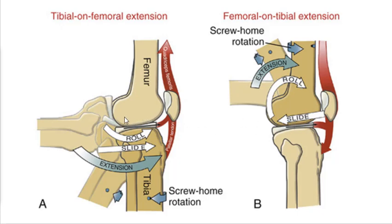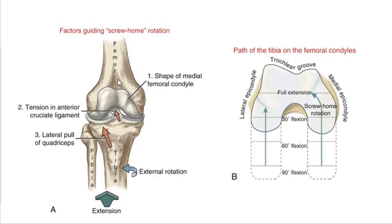Now, because the medial condyle is larger, there's a mechanism called the screw home rotation that brings the tibia a little bit further so that when you go into full extension, it accommodates the extra size of that medial condyle. So when looking from the front — patella removed — coming into terminal extension, there's a little bit of external rotation that occurs to lock out and allow for that larger shape of the medial condyle. There's a popliteus muscle that performs the unlocking, and we'll get into that next lecture when we talk about muscles.